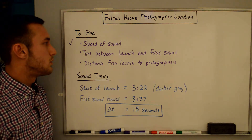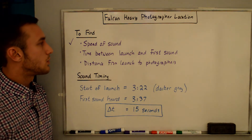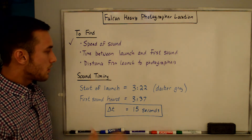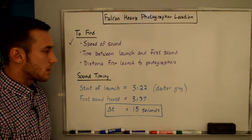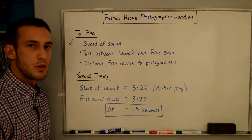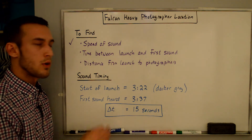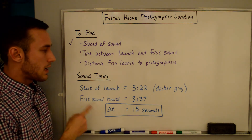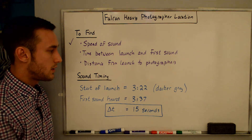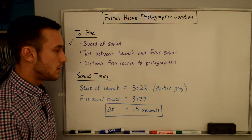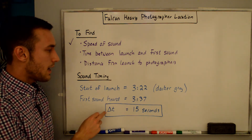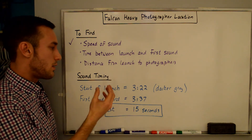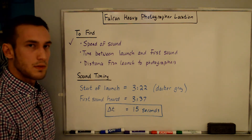Now that we have the speed of sound, we need to find the time between the launch and the first sound we hear in the video. If you go to the video, what I consider the start of the launch is at 3:22, when you see the darker gray smoke come out. And then the first sound that I hear is at 3:37. Taking the difference between these two, the time difference between when we see the startup and when we hear the first sound is 15 seconds.